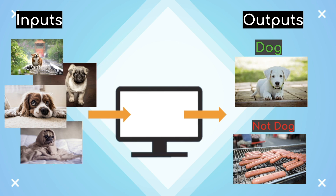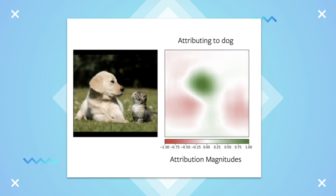However, we can't exactly know what the computer is looking at in the image to come to the conclusion of whether or not there is a dog. Captum can help us exactly see what features the AI model is relying on to recognize whether or not there is a dog in our picture. In this example, Captum shows us exactly that these green pixels are the ones that are most critical to helping us identify the dog in the image.